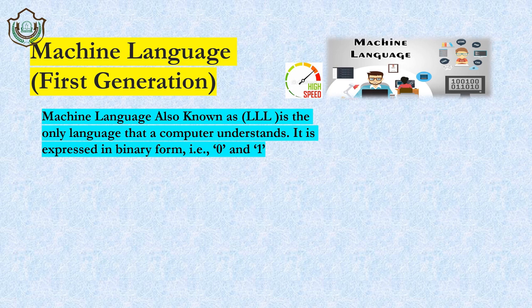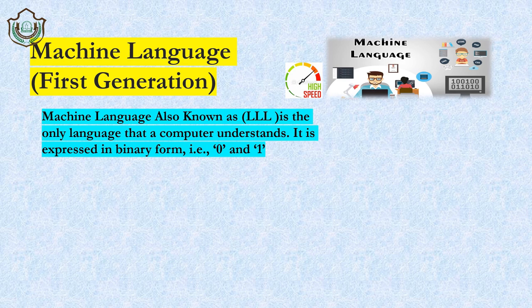Machine language is also called the first generation language. It is the only language that a computer understands properly. The computer understands only machine language because it is in the form of binary digits — 0 and 1. If we type 'hello how are you,' the computer will not understand it directly; it will automatically convert it into machine language and then give you the output.